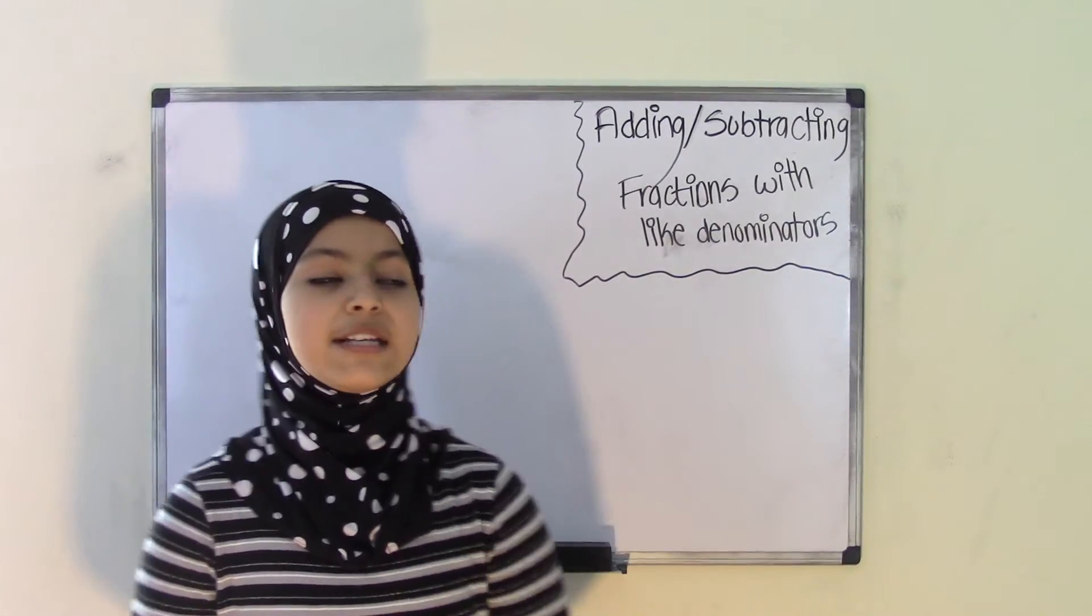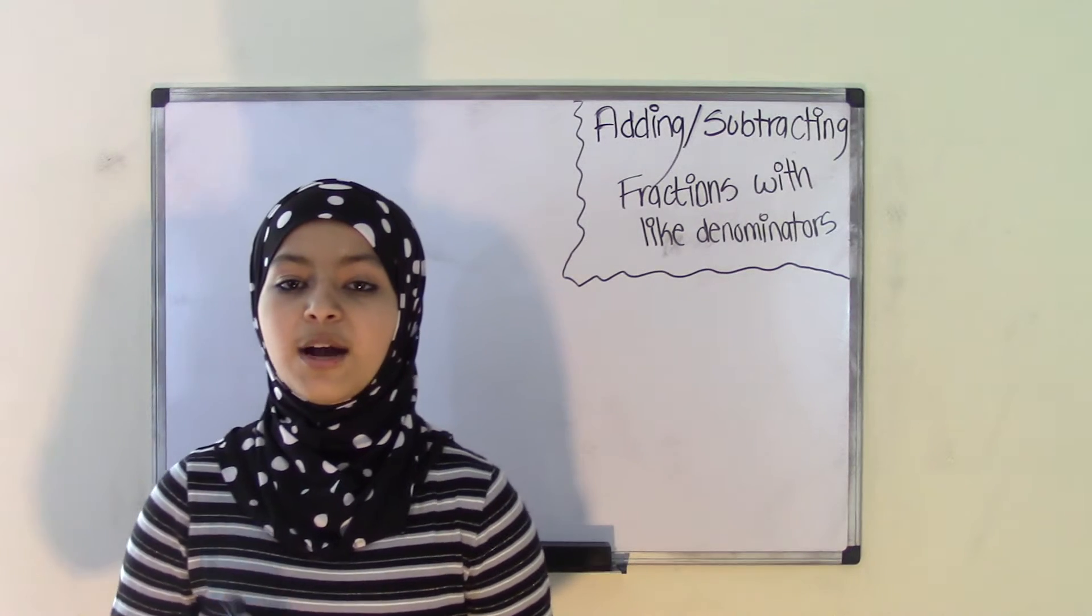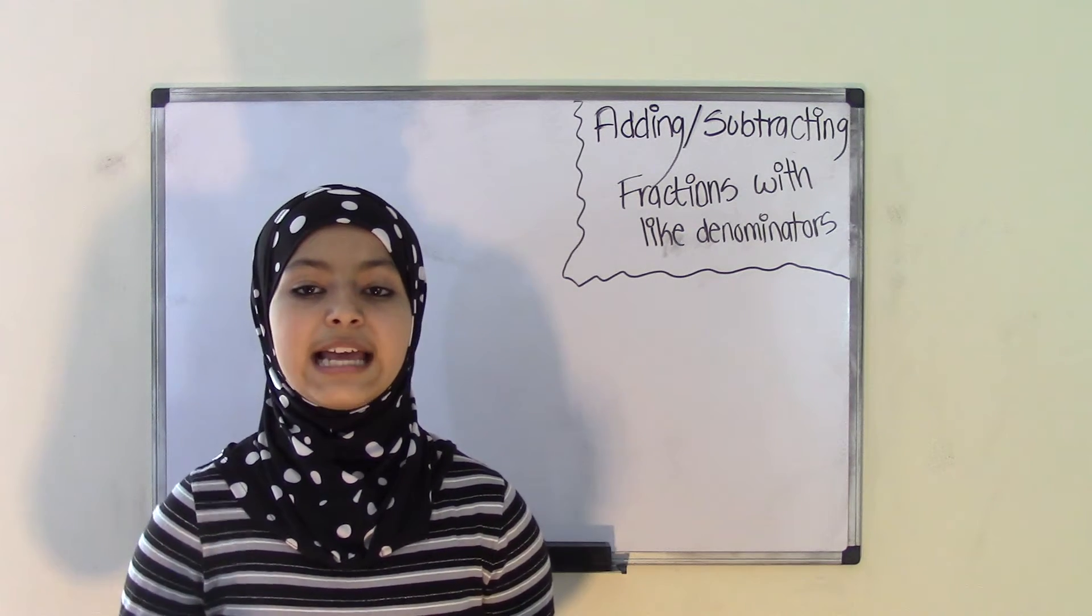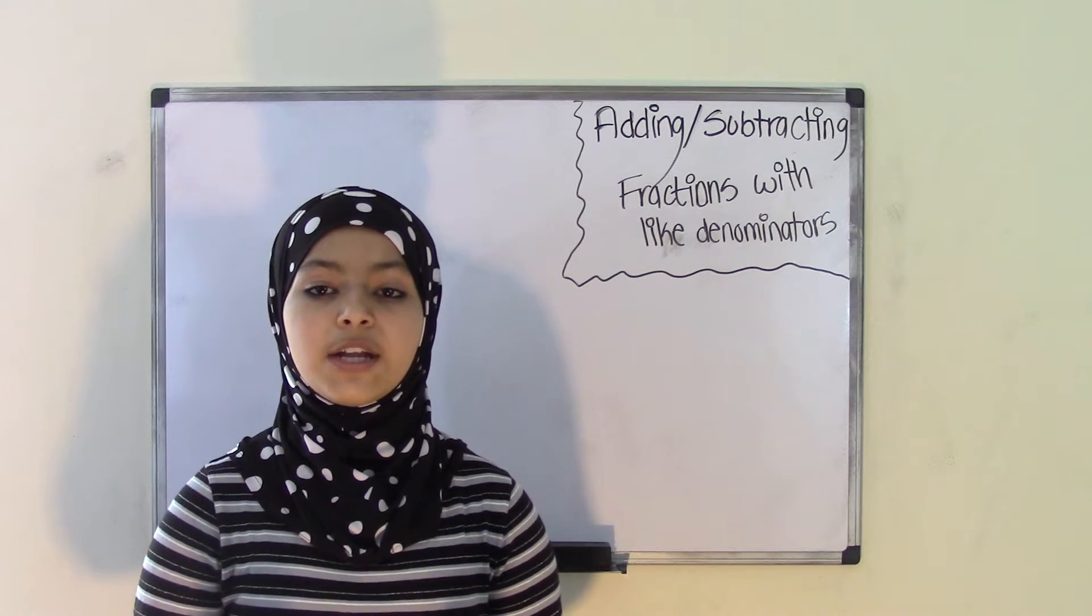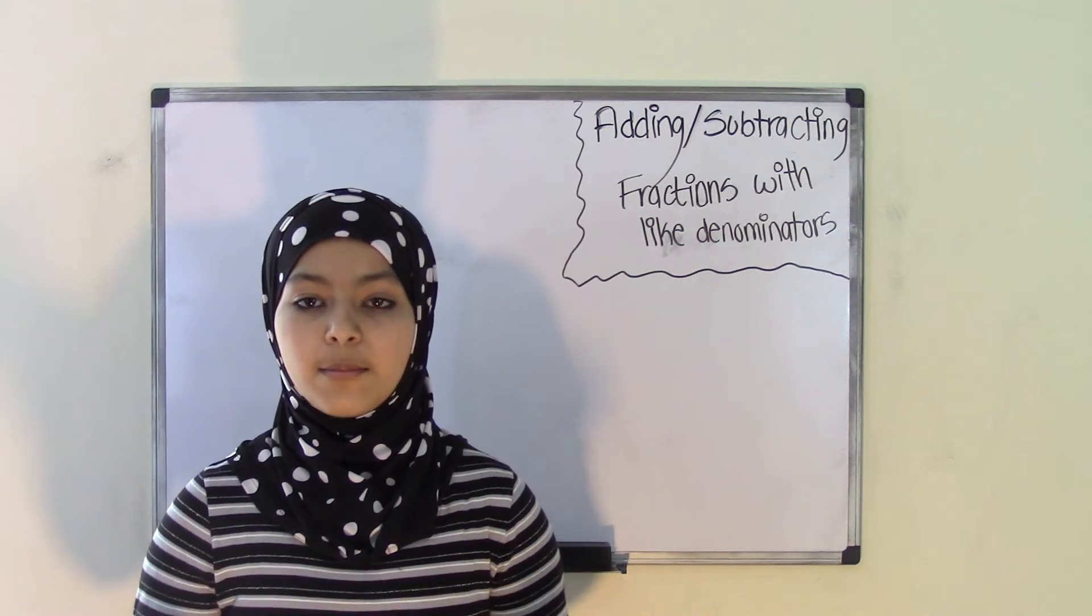Hey guys, welcome back to Brown System Math Club. Today's topic is adding and subtracting fractions with like denominators. Now what are like denominators? Like denominators are just denominators that are the same. So today we'll be learning how to add and subtract fractions with the same denominators.